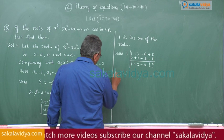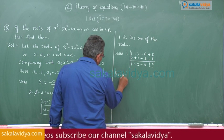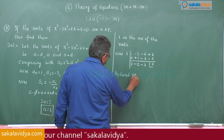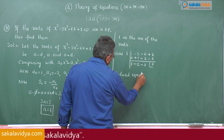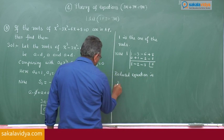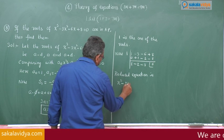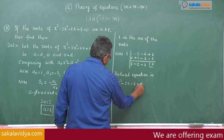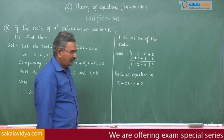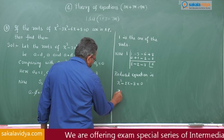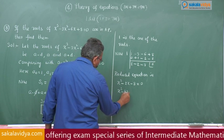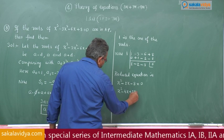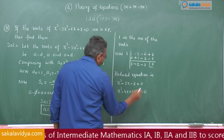The reduced equation is x² - 2x - 8 = 0, which we can write as x² - 4x + 2x - 8 = 0.